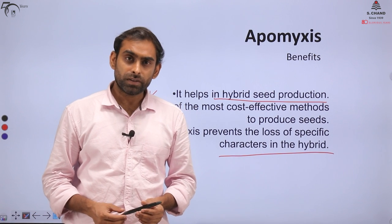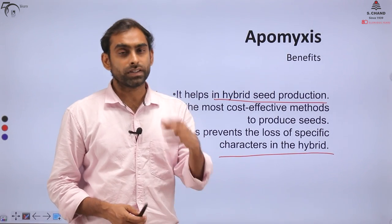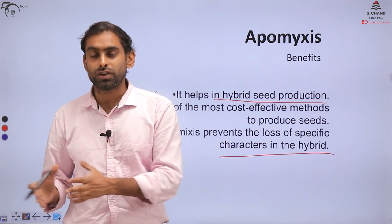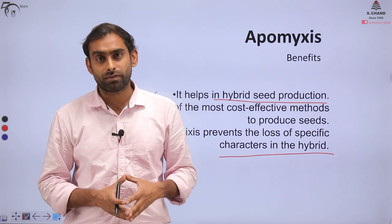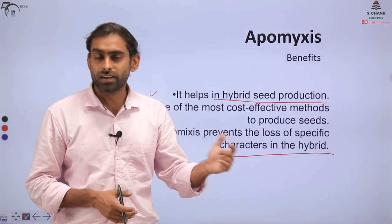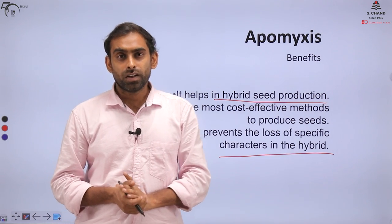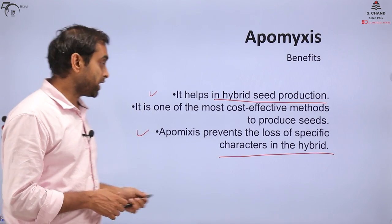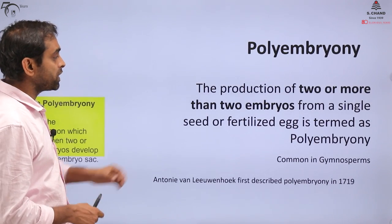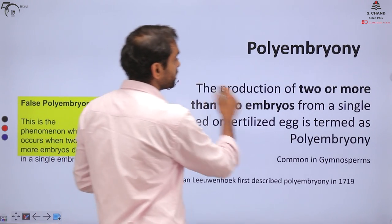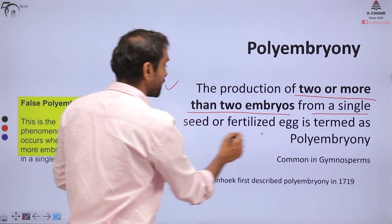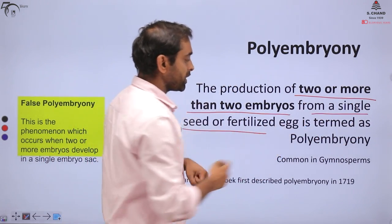Welcome back. We were talking about two interesting aspects of plant reproduction — Apomyxis and Polyembryony — which are exceptions compared to normal embryonic development. Polyembryony is the production of two or more than two embryos from a single seed or fertilized egg.